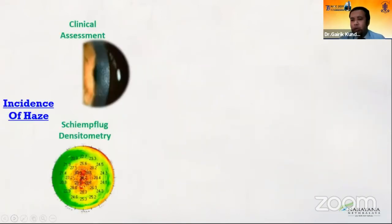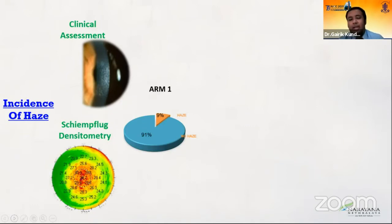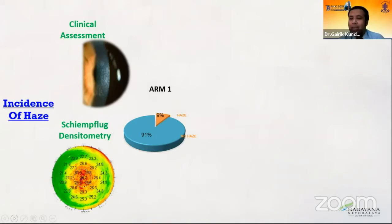We looked at the retrospective data, which included an analysis of 238 patients, and found surprisingly that 9% of them had HAZE. There are ways of classifying or looking at HAZE. The most common clinical evaluation is known as the FANTAS classification. We also objectively looked at analyzing HAZE using densitometry.